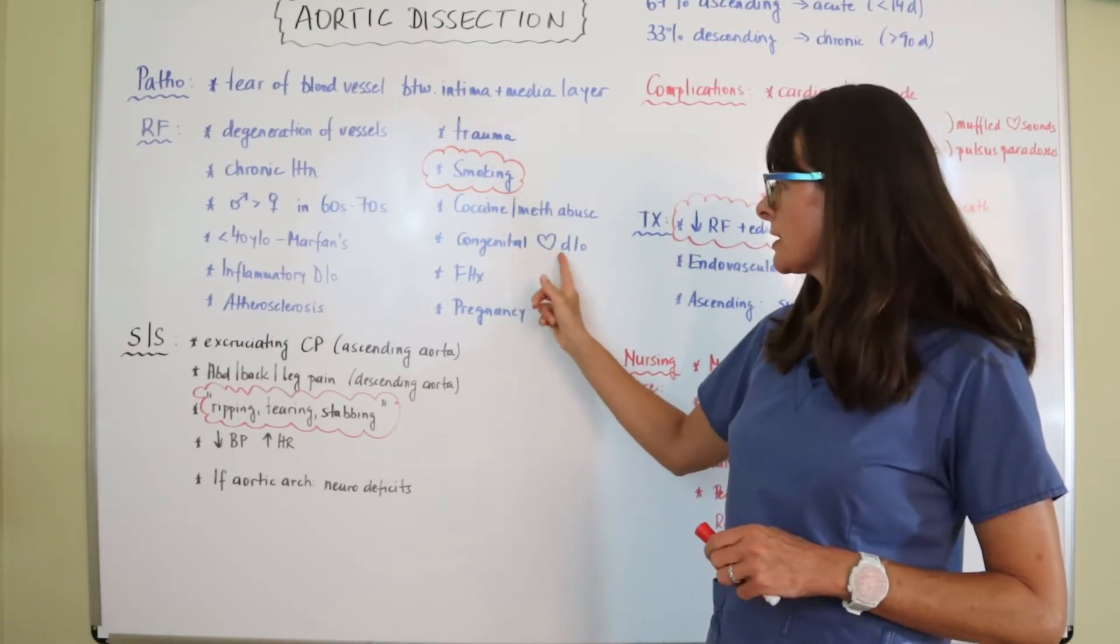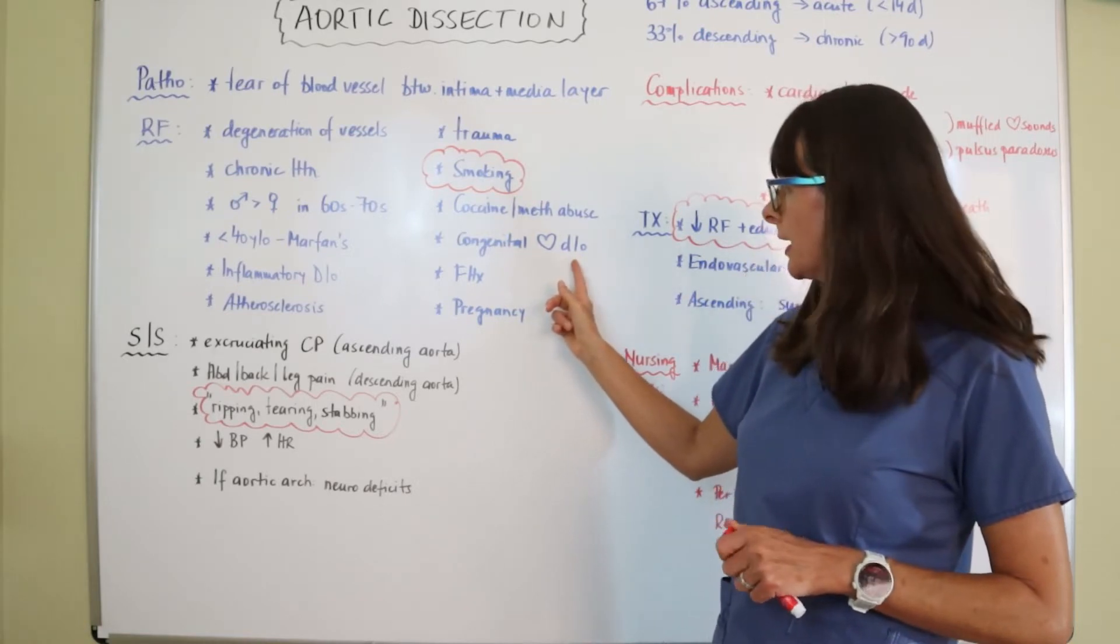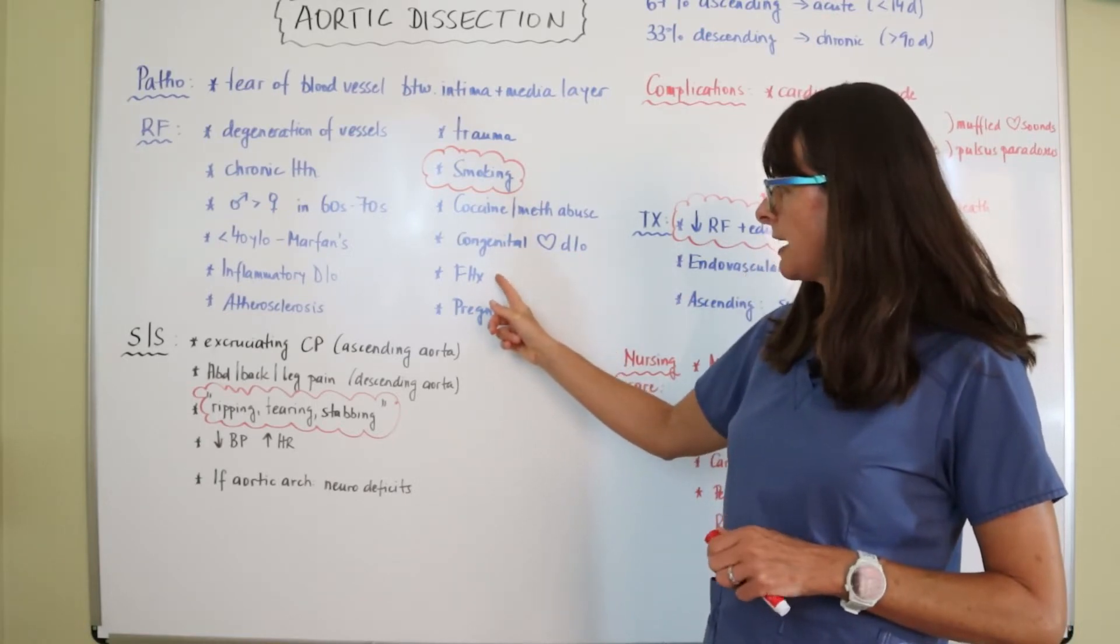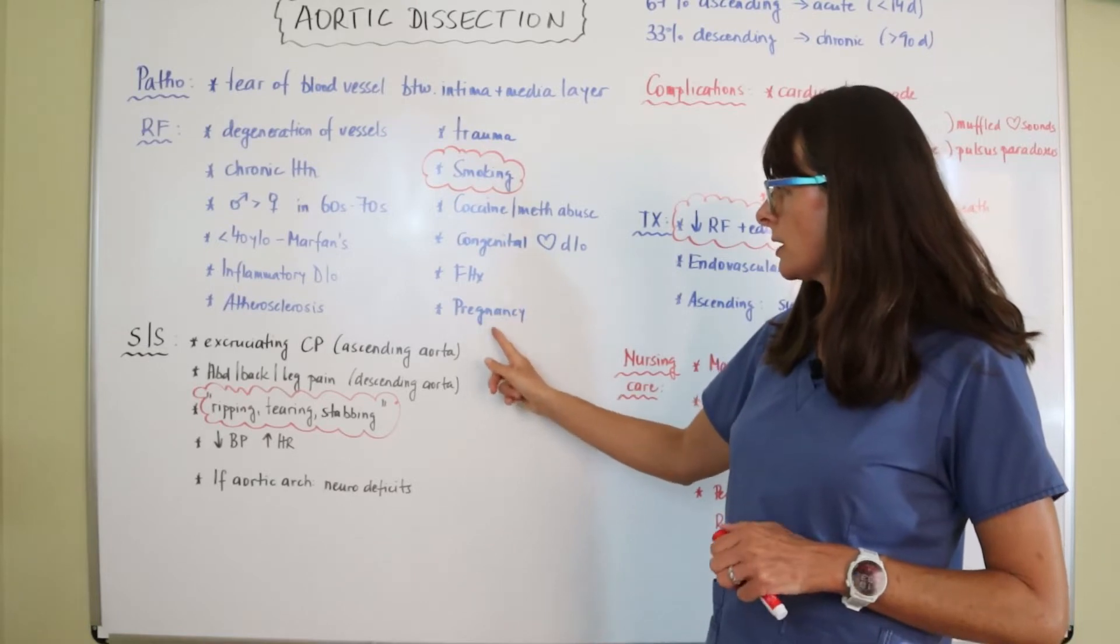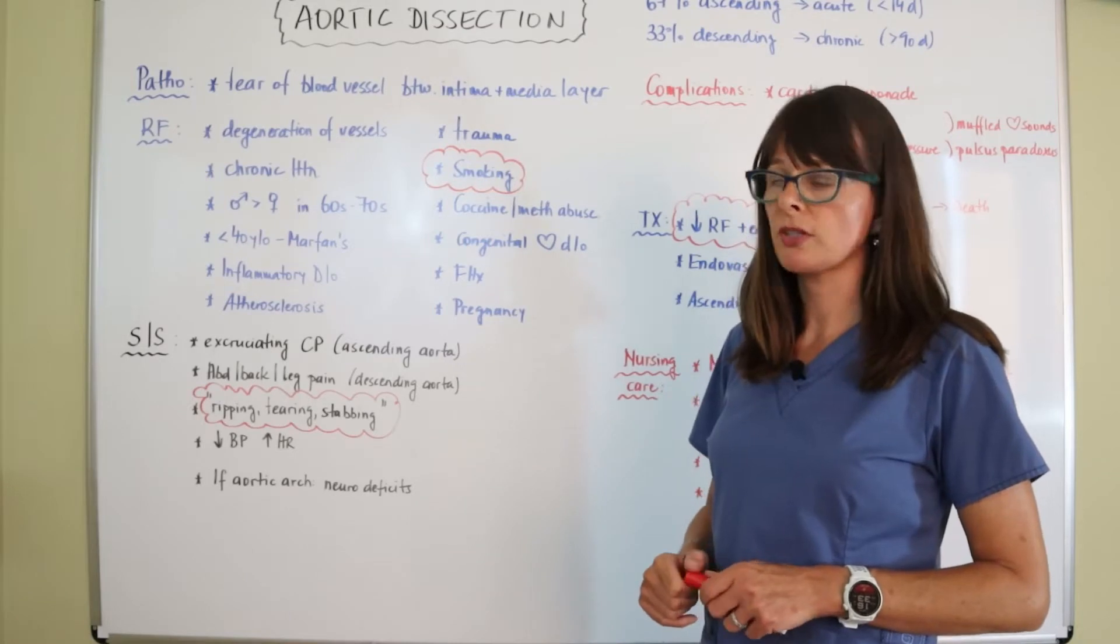Smoking is a big risk factor here, as well as cocaine and methamphetamine abuse. Patients with congenital heart disorders, especially those that concern the heart valves are at higher risk. If there's a family history, as well as pregnancy puts patients at higher risk for developing aortic dissections.